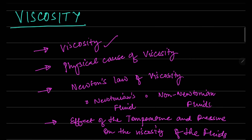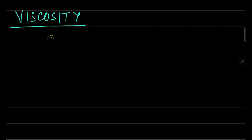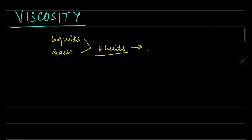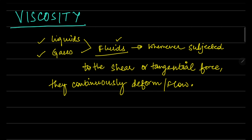Viscosity: as we are already aware, liquids and gases are classified as fluids because whenever any shear force or tangential force is applied, they continuously deform or flow. That's why they are called fluids. We can sum up that fluids, whenever subjected to shear or tangential forces, continuously deform or flow.